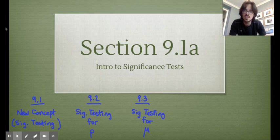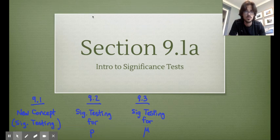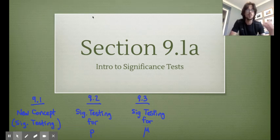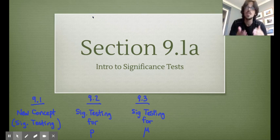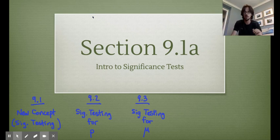The two main tools for statistical inference are the confidence interval, which we just learned about, and the significance test, which is just as important if not more important. Section 9.1 covers this new idea of significance testing, 9.2 covers p problems, and 9.3 covers mu problems.